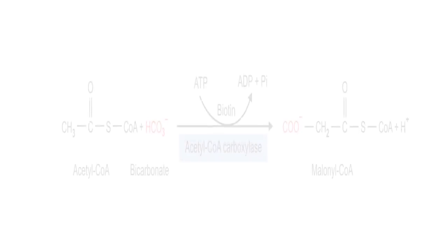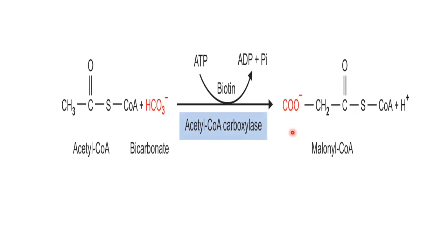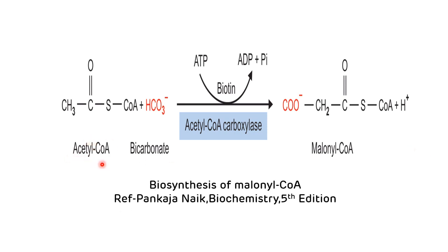The second phase of de novo fatty acid synthesis is the carboxylation of acetyl-CoA. This reaction is carried out by acetyl-CoA carboxylase, which requires biotin as a coenzyme. Since it is a carboxylation reaction, energy is required in the form of ATP. At the end of this reaction, acetyl-CoA is converted to malonyl-CoA, and this is the rate-limiting step for de novo fatty acid synthesis.